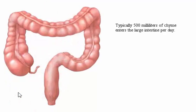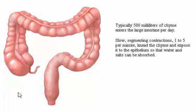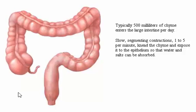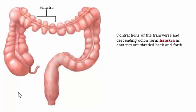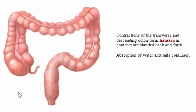Typically, 500 milliliters of chyme enters the large intestine per day. Slow segmenting contractions, 1 to 5 per minute, knead the chyme and expose it to the epithelium so that water and salts can be absorbed. Contractions of the transverse and descending colon form haustra as contents are shuttled back and forth, and absorption of water and salts continues.